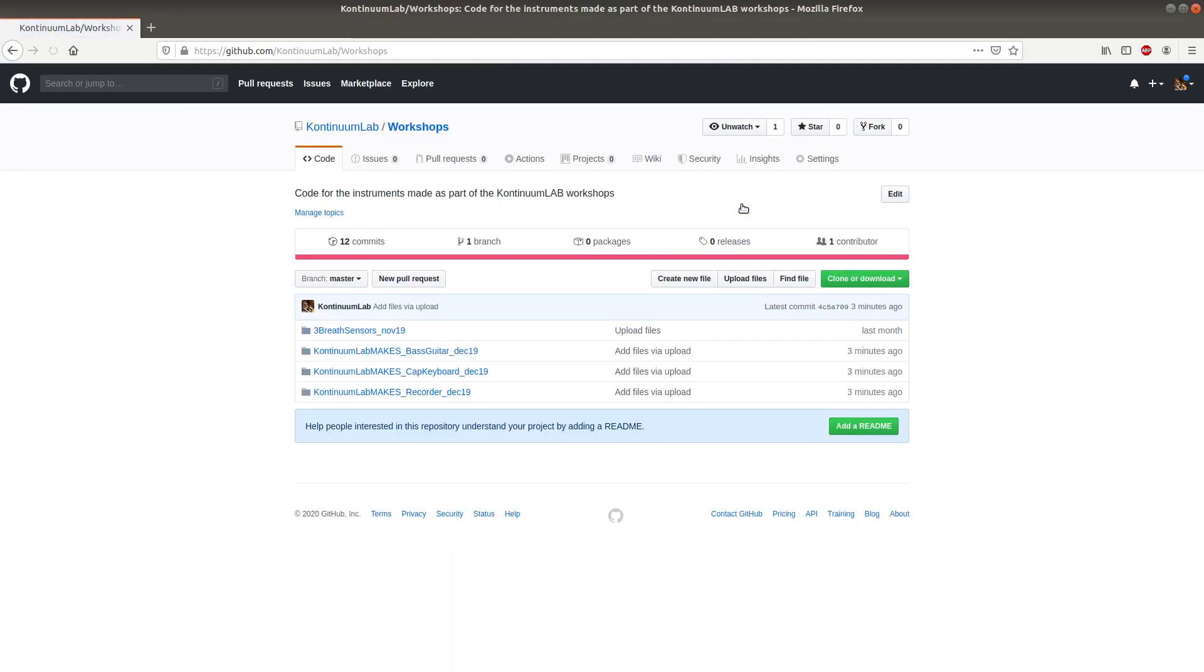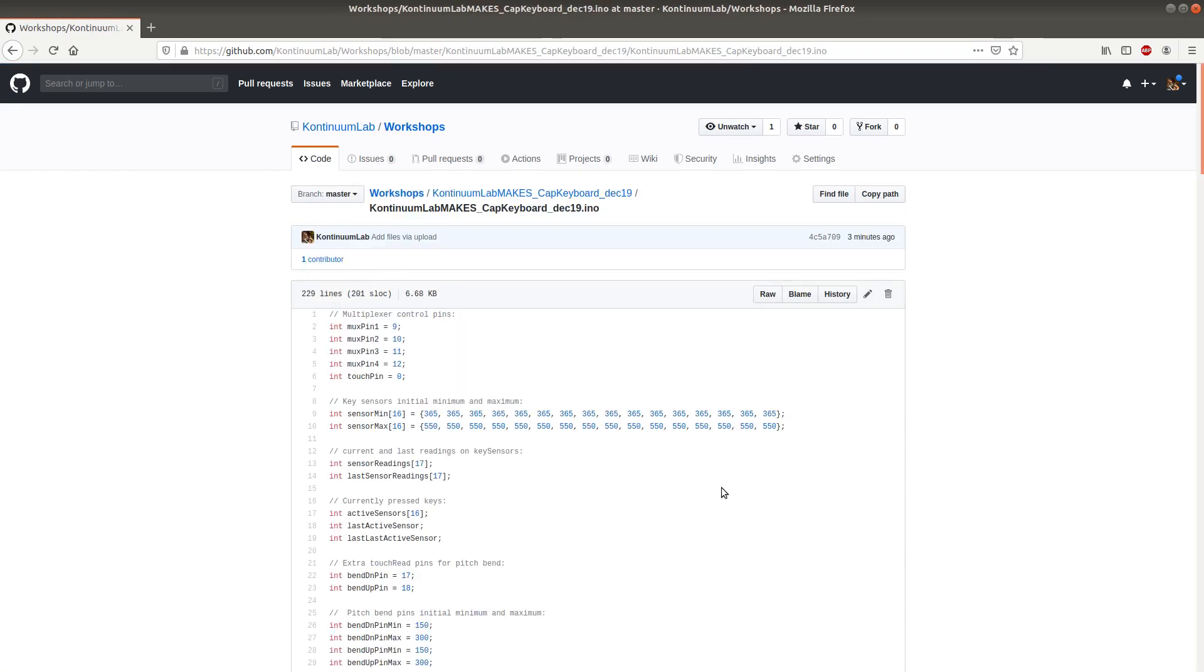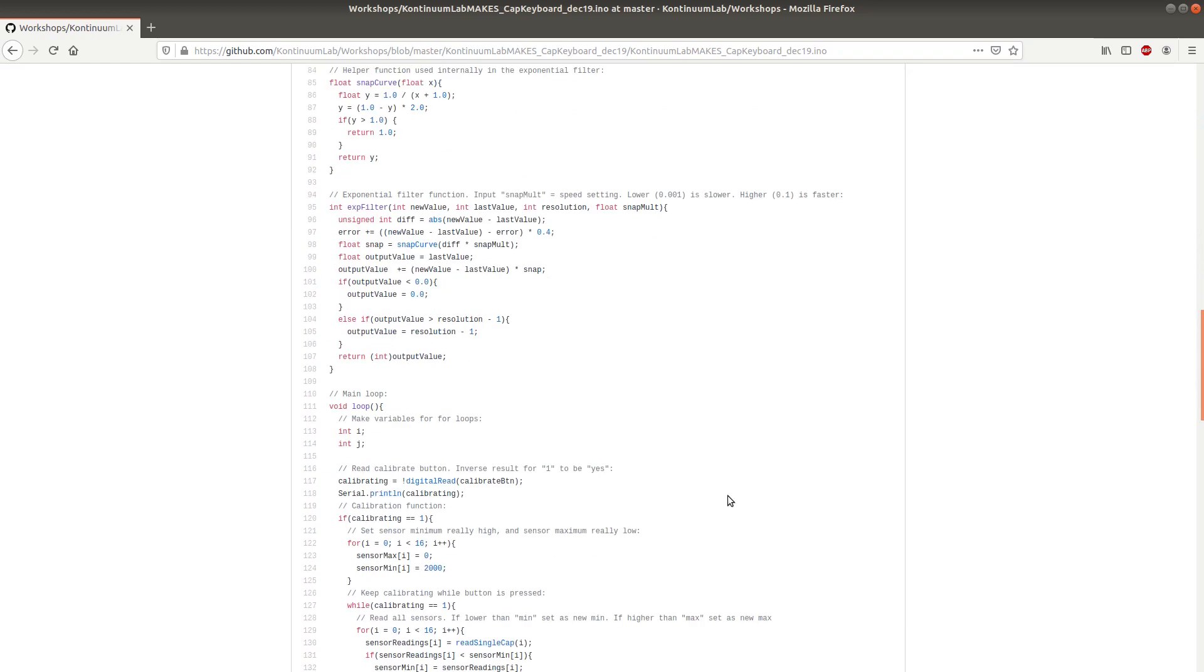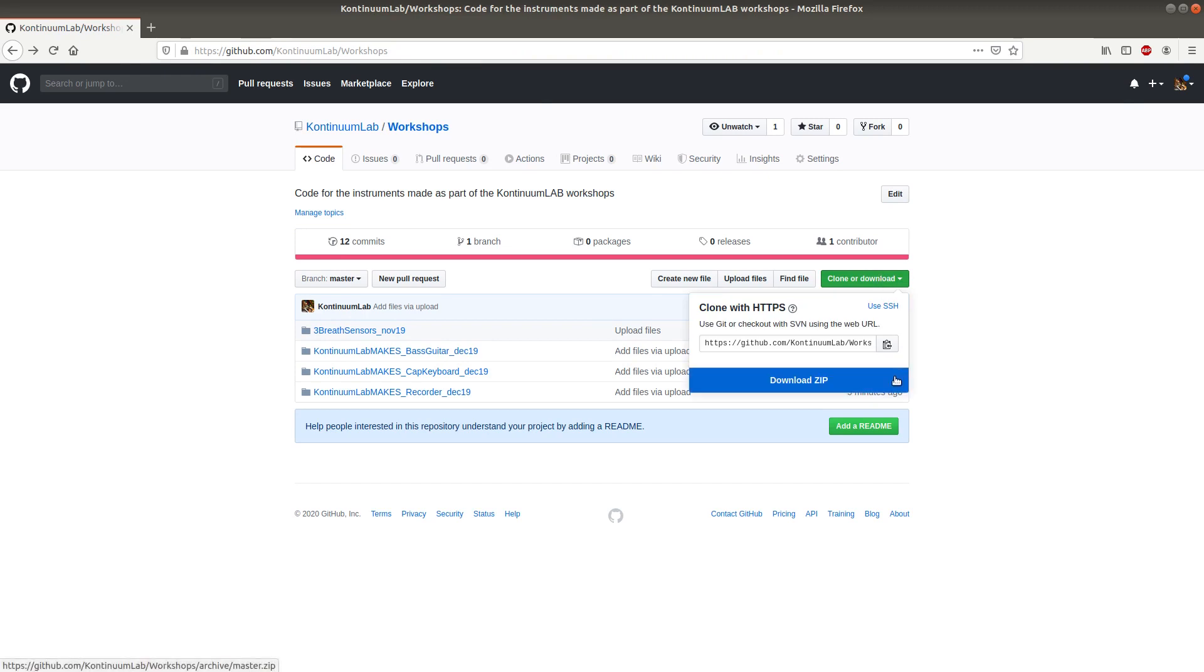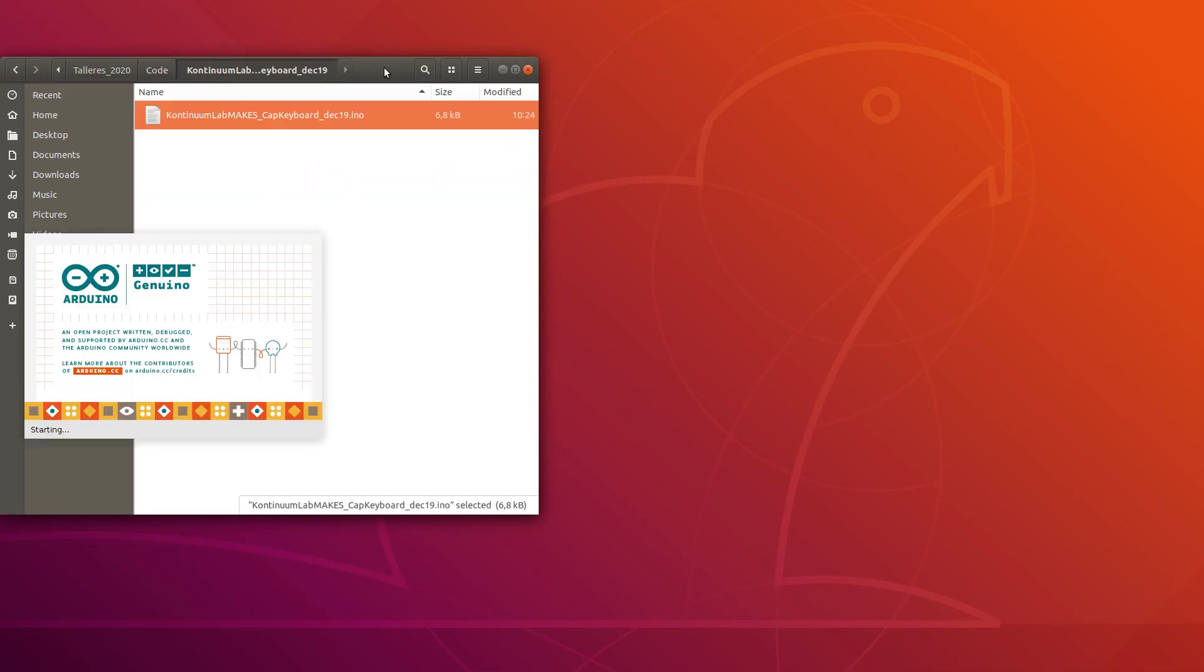The sketch that I need is on the Continuum Lab GitHub page, this one here, and it's very similar to the code on the other keyboards that I made in the past. The most notable change is that it now has comments, which explain the different steps and functions and so on. So I'll download that from here, and then upload it to the instrument using Arduino.